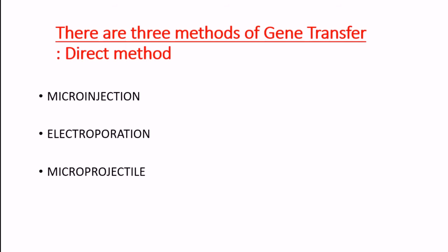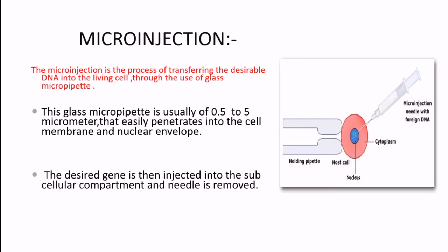Microinjection is the process of transferring DNA into living cells through the use of a glass micropipette. You can see the glass micropipette with a needle, which is 0.5 to 5 micrometers in diameter. This is used as a physical method, most widely used in animal cells, as it easily penetrates the cell membrane and nuclear envelope.